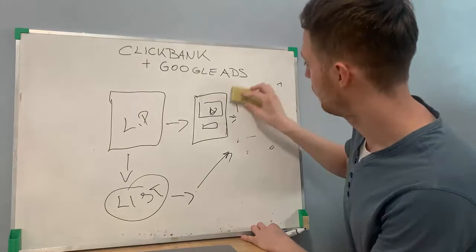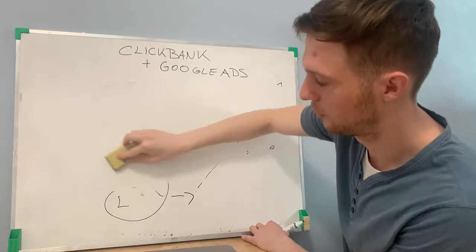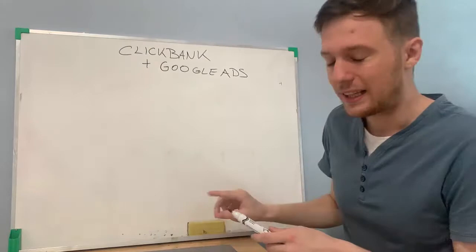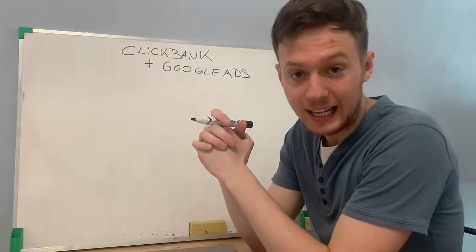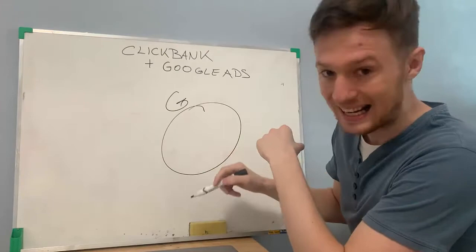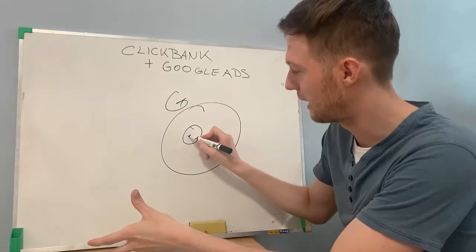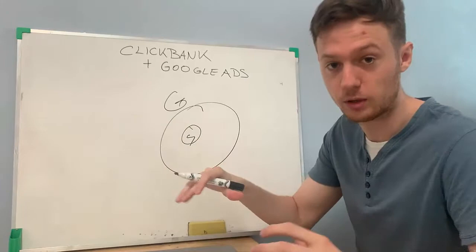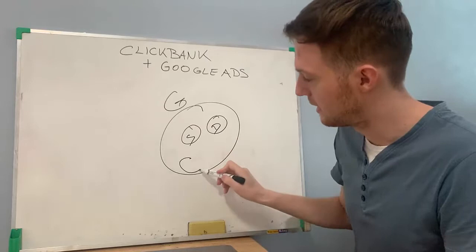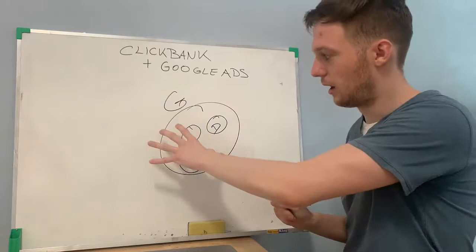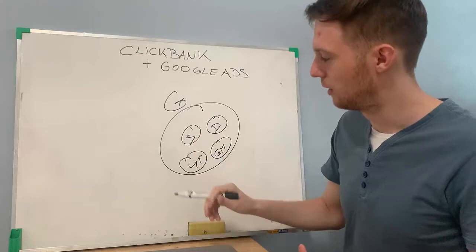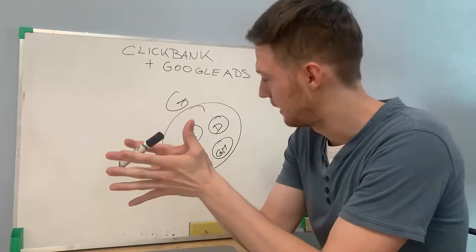I'm going to explain a few basic principles when it comes to Google Ads that are important for you to understand. The Google Ad network is a really big network and there are different networks within it. You have search network — when you're going to Google and typing in a specific keyword. Then you have display network, then there is YouTube, Gmail ads, and basically all of these different networks within one network.